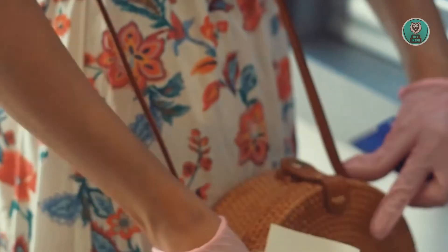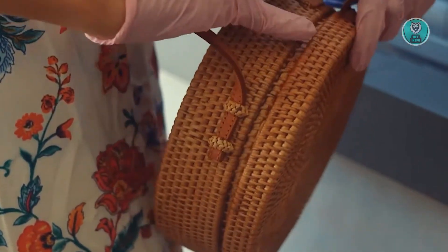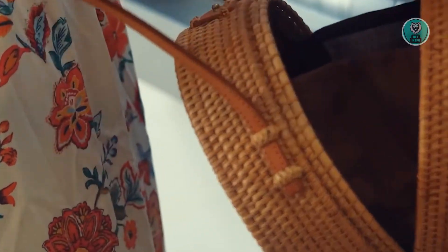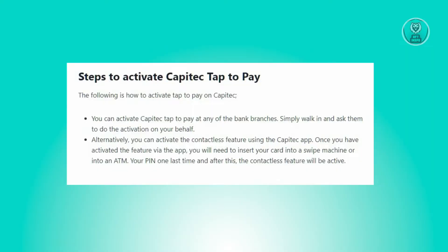The first thing that you want to do is open up the Capitec app. At the very bottom you should see a section that says 'Card' — go ahead and open that.